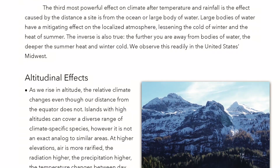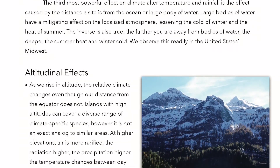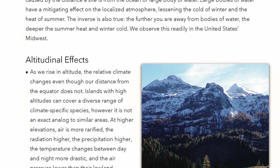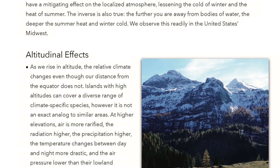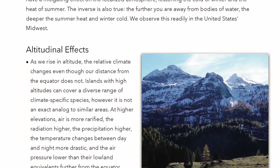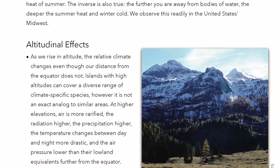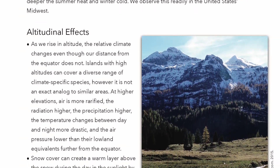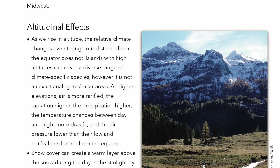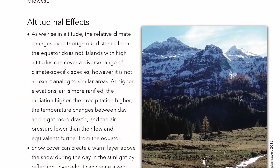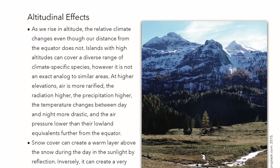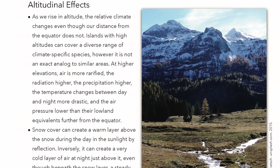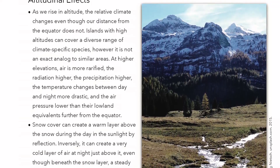Altitudinal effects. As we rise in altitude, the relative climate changes even though our distance from the equator does not. Islands with high altitudes can cover a diverse range of climate-specific species. However, it is not an exact analog to similar areas. At higher elevations, air is more rarefied, the radiation higher, the precipitation higher, the temperature changes between day and night more drastic, and the air pressure lower than their lowland equivalents further from the equator.